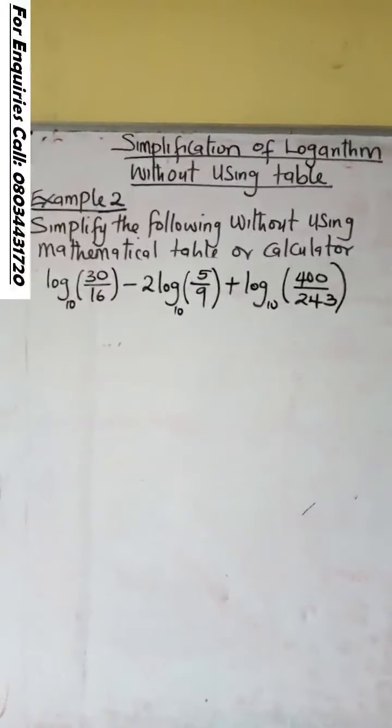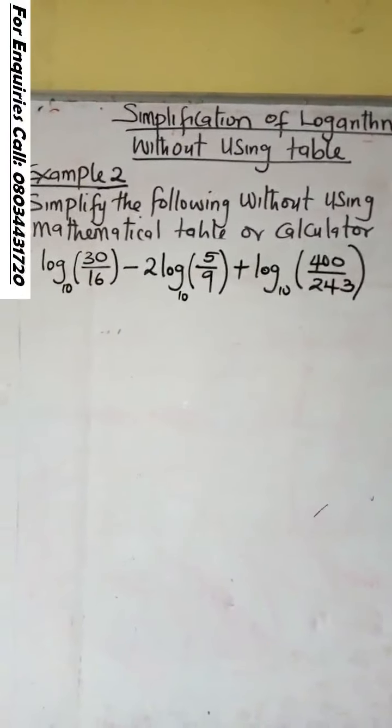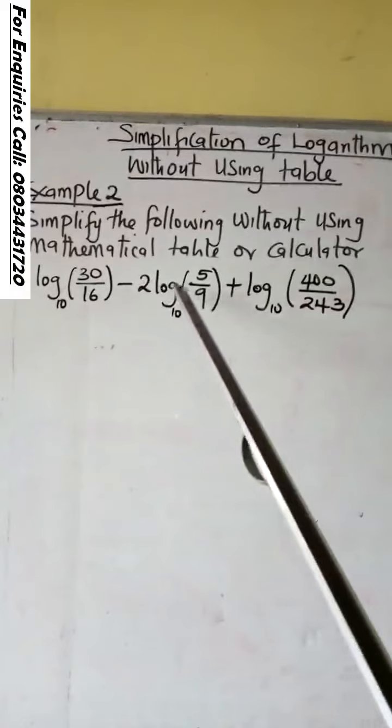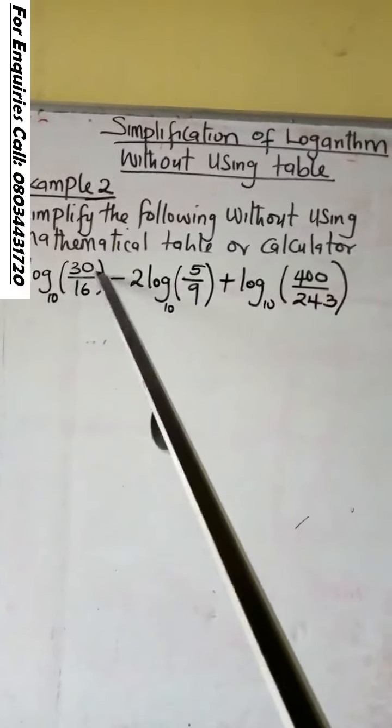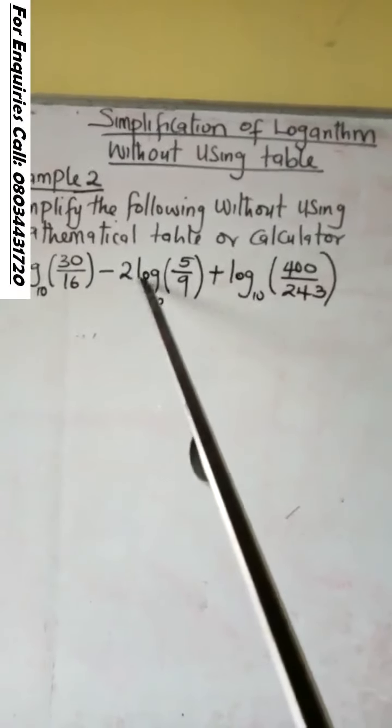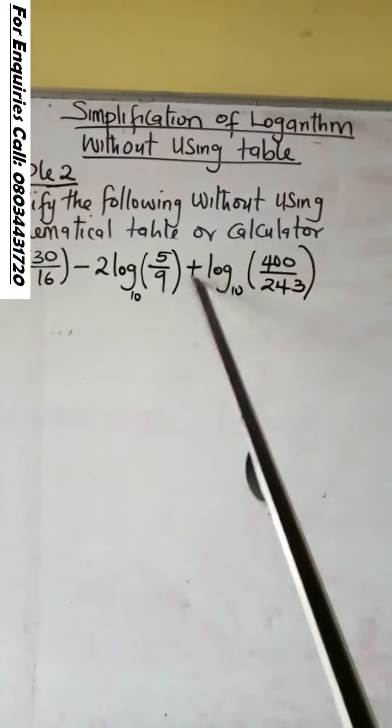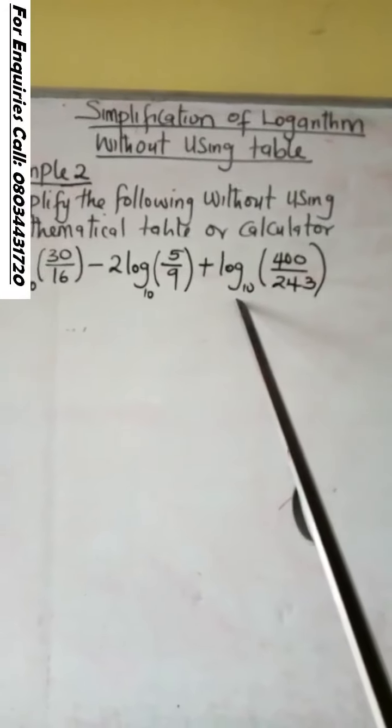Simplification of logarithm without using table. Let us simplify the following expression without using mathematical table or calculator: log₁₀(30/16) - 2log₁₀(5/9) + log₁₀(400/243).